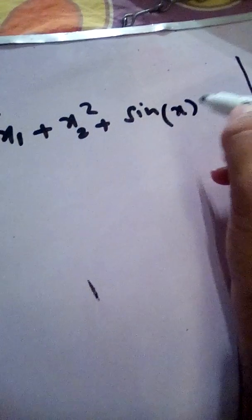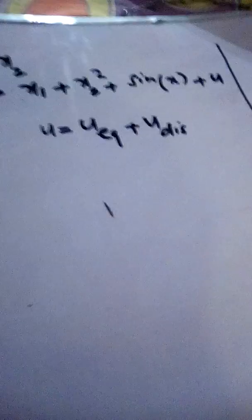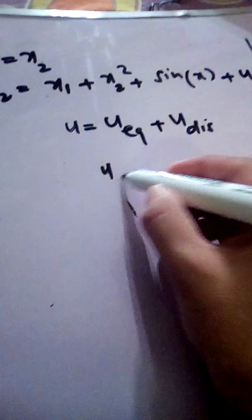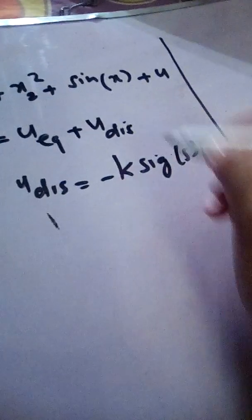The second state equation is x2 dot equals x1 plus x2 squared plus sine of x plus the control input u. Our controller is a sliding mode controller, and we take u as u_equivalent plus u_discontinuous. u_equivalent is the control when trajectories are on the sliding surface, and u_discontinuous is defined as minus k times sign(s), where s is our sliding surface or sliding manifold.